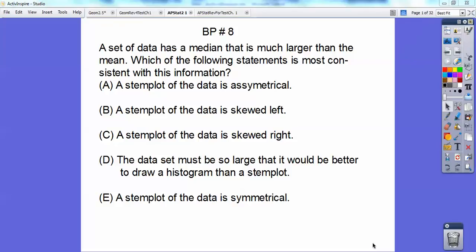A set of data has a median which is much larger than the mean. That means the mean is to the left of the median. So which of the following statements is consistent with this information? Asymmetrical just means it's not symmetric. And it's not symmetric, but even more specific, it's skewed to the left.